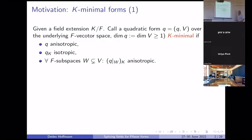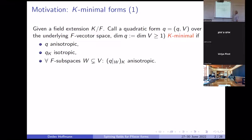This is something I did in my thesis more than 30 years ago. It's about k-minimal forms. The idea behind it was work by Lewis and Fangiel, based on work by Rost on the excellence of function fields of conics. They studied what I then called minimal forms for a field extension.